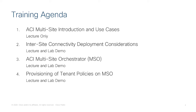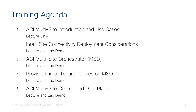The following module will then cover the best practices to provision the tenant policies from MSO. We'll talk about how to deploy schemas, how to deploy templates, and how to push this configuration to the different ACI sites. In the last module of the training, we will go under the hood of the ACI multi-site architecture. We will talk more specifically about the control plane, the data plane, and what are the different ways to establish inter-site connectivity between endpoints connected to different ACI fabrics.